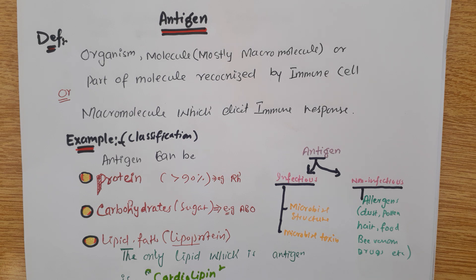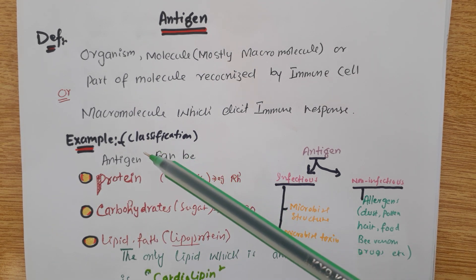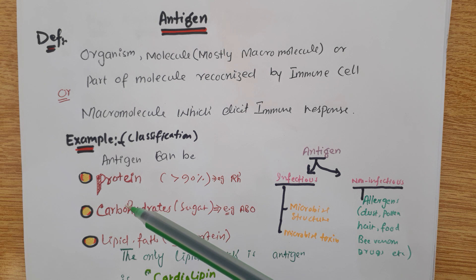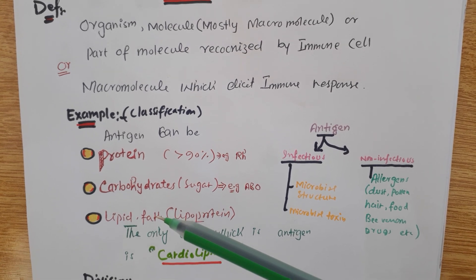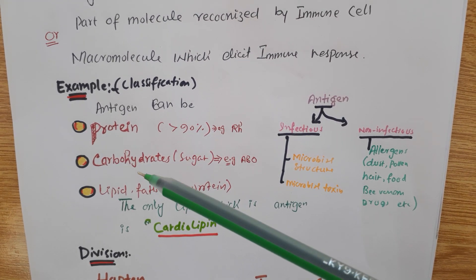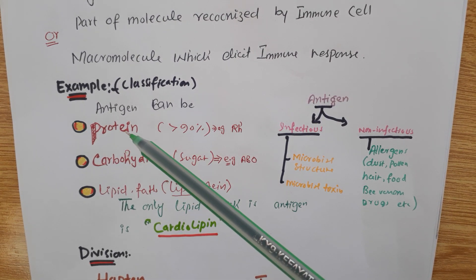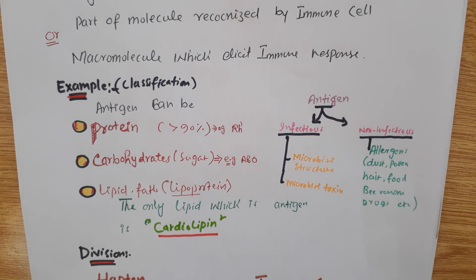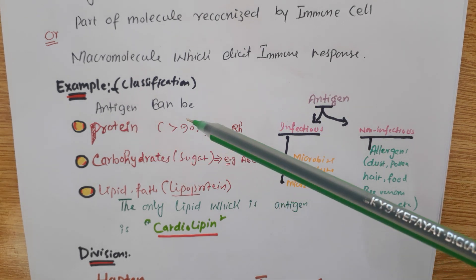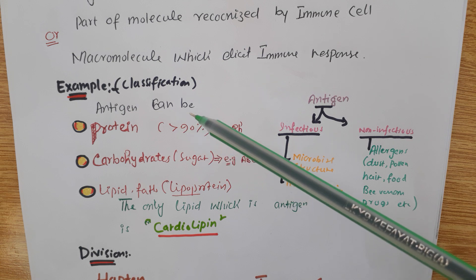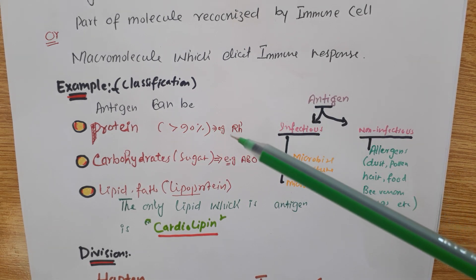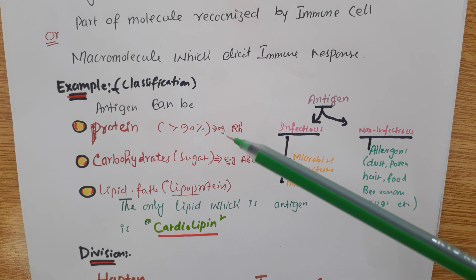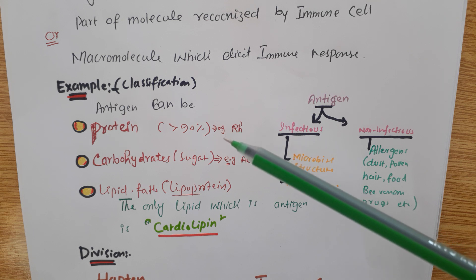Chemically, antigen can be protein, antigen can be carbohydrates, antigen can be lipid. Mostly antigens are protein in nature — the chemical structure will be protein. It is like more than 90% of antigens are protein. You have to remember this point for MCQs: the majority of antigens are protein.